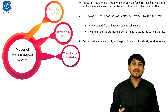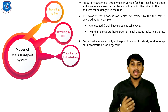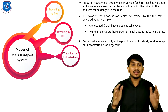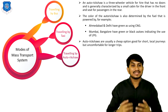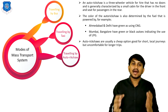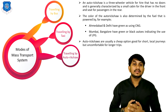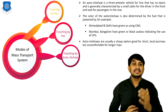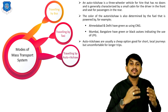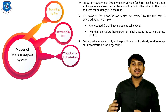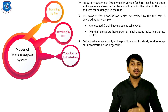Third is travelling by auto-rickshaw. An auto-rickshaw is a three-wheeler vehicle for hire that has no doors, and is generally characterized by a small cabin for the driver in the front and a seat at the back for passengers. The color of the auto-rickshaw is determined by the fuel it is powered by. For example, in Emda Park and Delhi they have green color because they run on CNG. In Mumbai and Bangalore, they have green or black tops indicating the use of LPG. Auto-rickshaws are usually a cheap option, good for short local journeys but uncomfortable for longer trips.